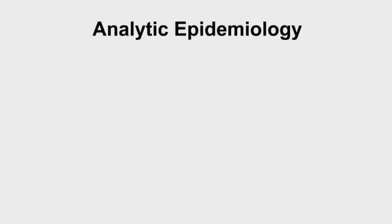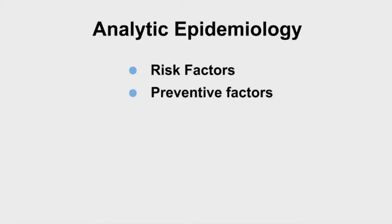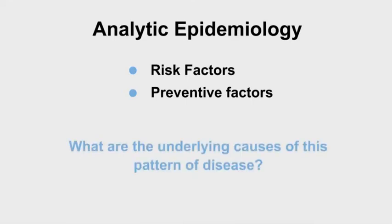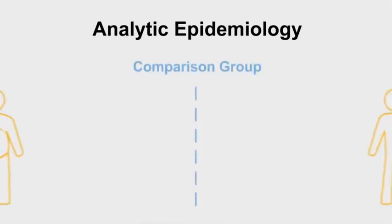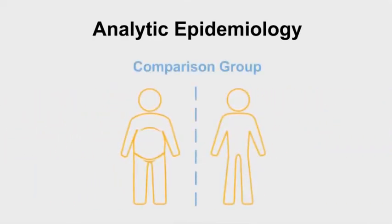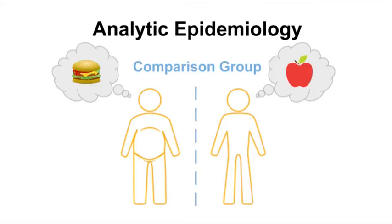Analytic epidemiology aims to research and study risk factors and preventive factors for diseases. When we ask what are the underlying causes of this pattern of disease or health outcome and investigate the causes, we are using analytic epidemiology. Use of a comparison group is a key feature of analytic epidemiology. It focuses on the search for causes and effects — the why and the how of what causes a health outcome. For example, a study on the causes of obesity would examine dietary differences among two or more comparison groups.